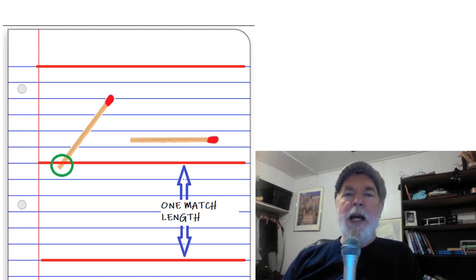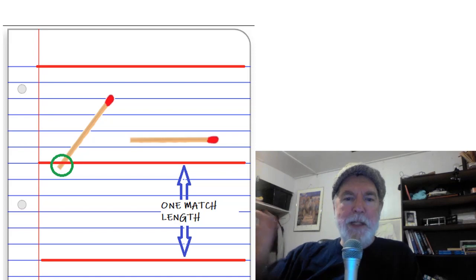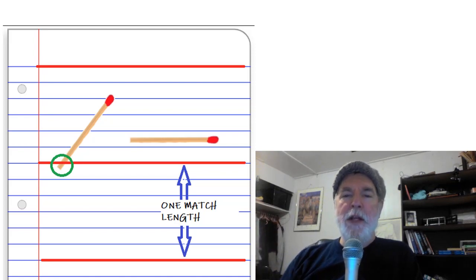And now here's how you do that. First, you need to measure the length of the match in terms of line spaces on the paper. In this example, the match is six spaces long. Now notice that it's spaces that we're counting, not how many lines it potentially touches. It's spaces between the lines.